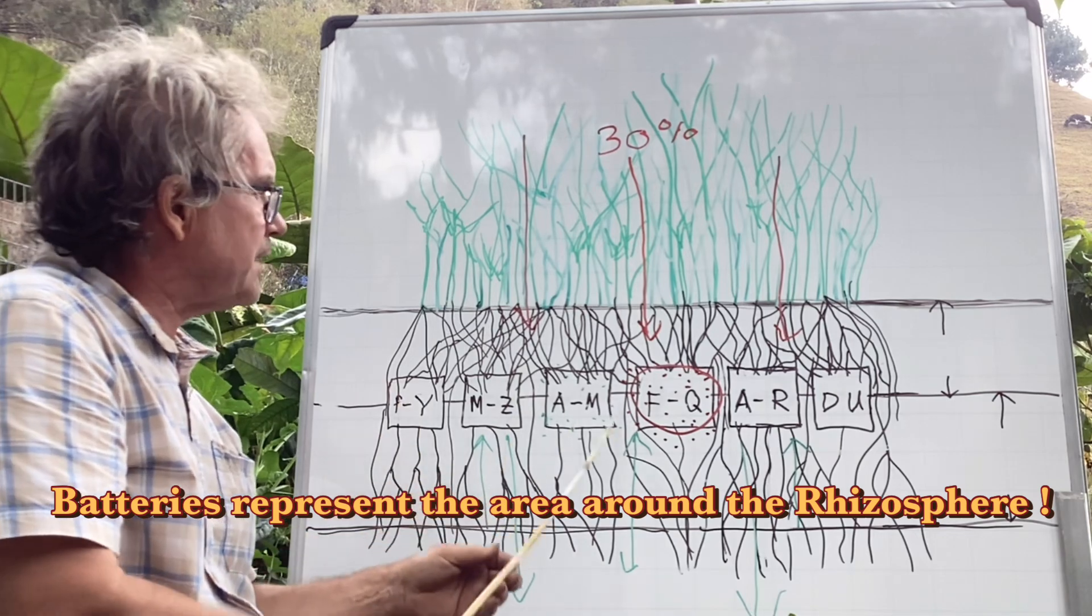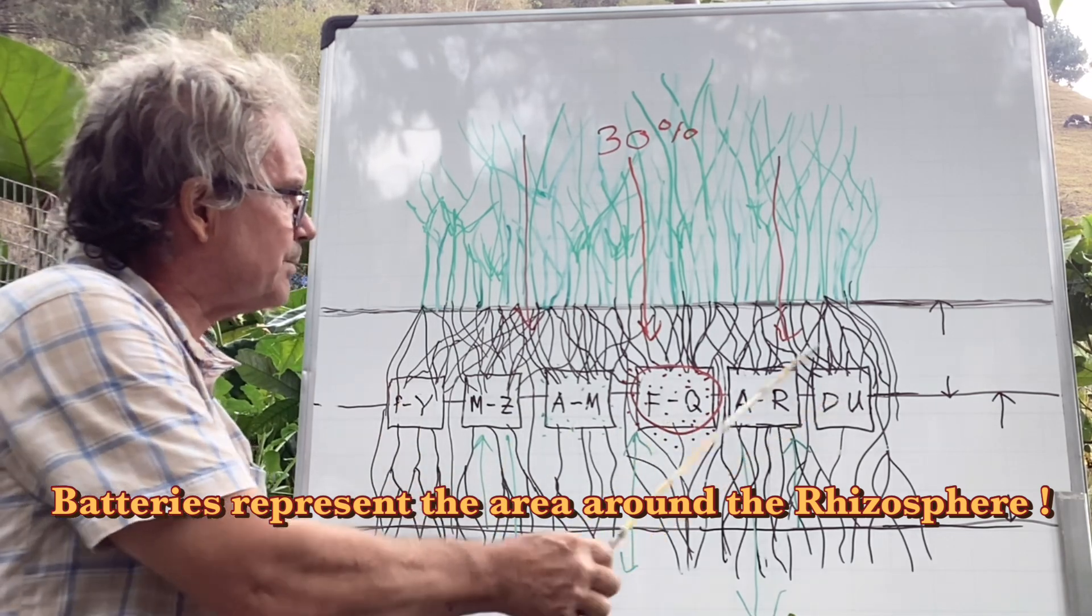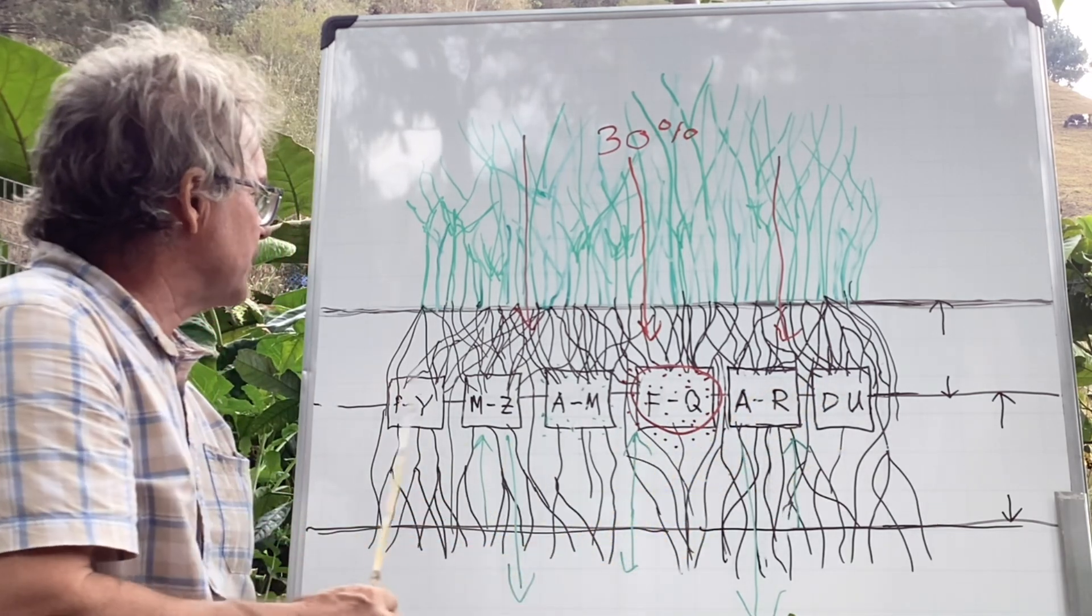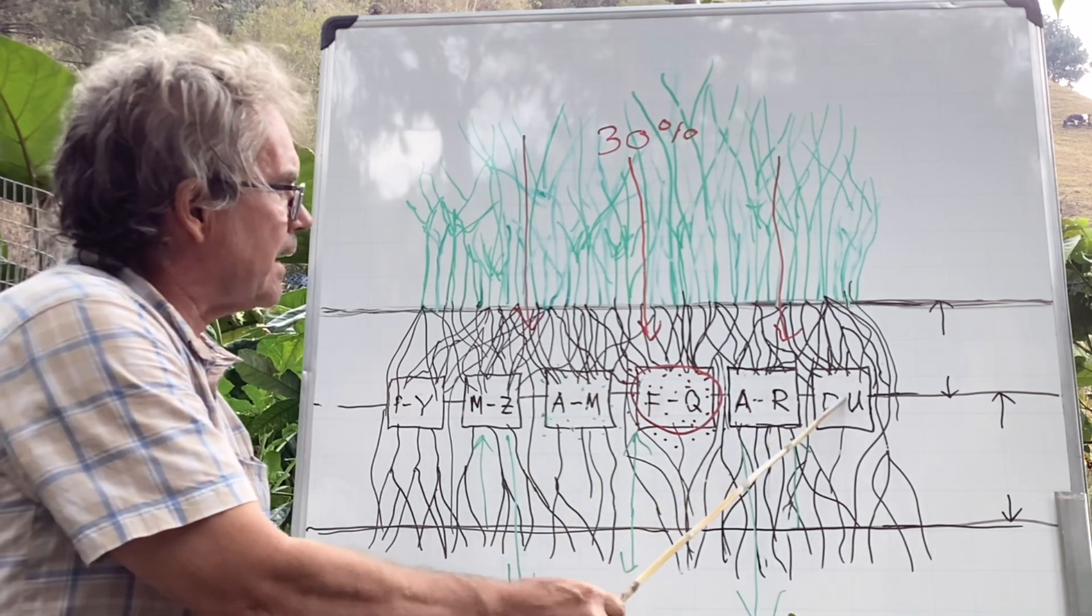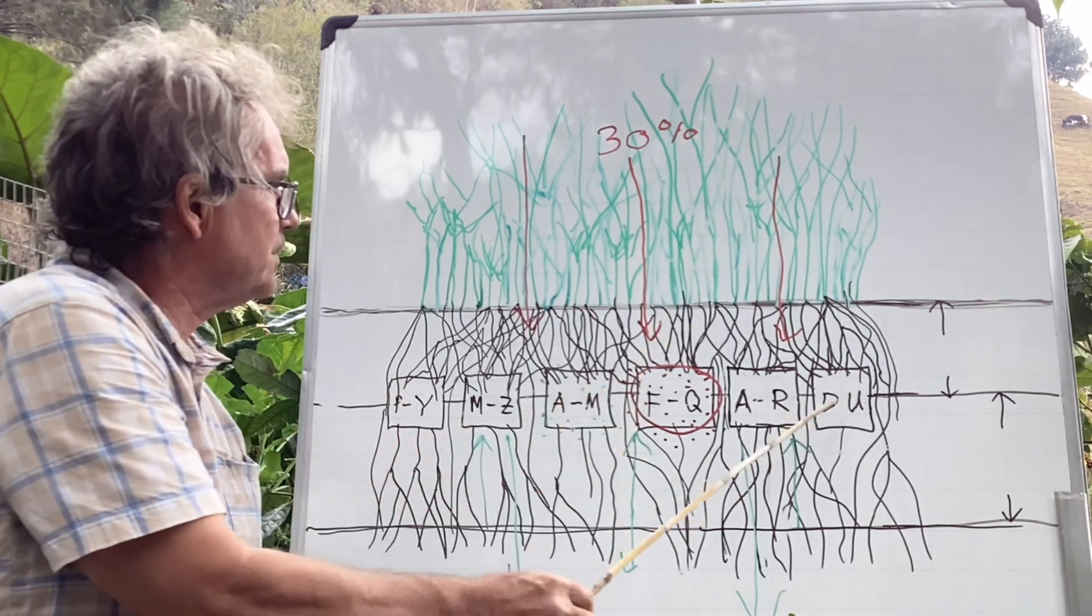And these squares are representing batteries that don't exist but it's a good way to represent the different energy and sugars that are being sent back into the ground.